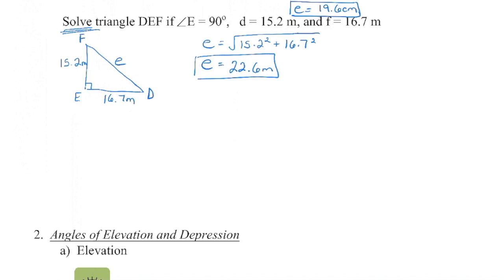It doesn't matter what you start with, so I'll start with angle F at the top. If I start with angle F, I know I'm given the opposite side and the adjacent side — that is going to be my tangent ratio. So I set up: the tangent of angle F is the opposite side divided by the adjacent side. In your calculator, use second function tangent, then 16.7 divided by 15.2. Angle F comes out to be 48 degrees.